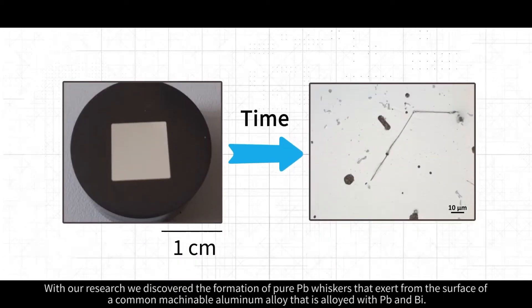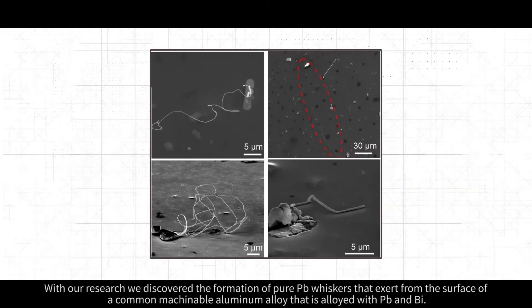With our research, we discovered the formation of pure lead whiskers that exert from the surface of a common machinable aluminum alloy that is alloyed with lead and bismuth.